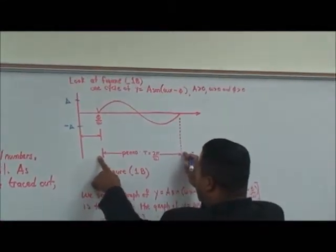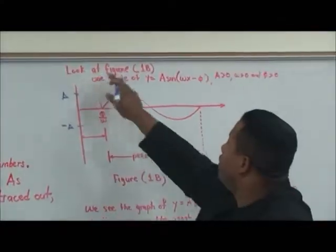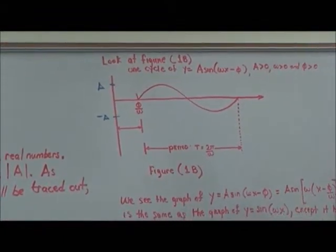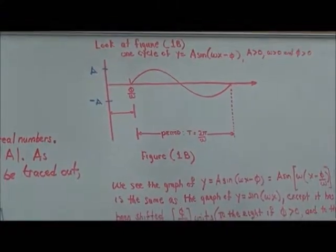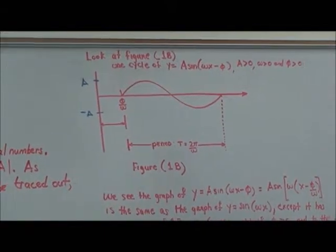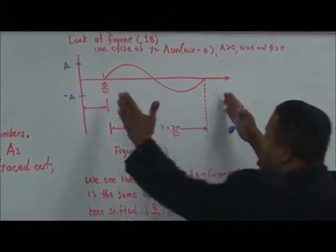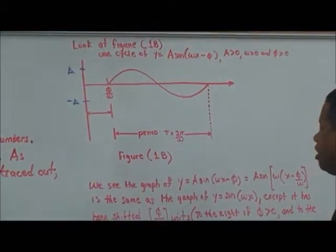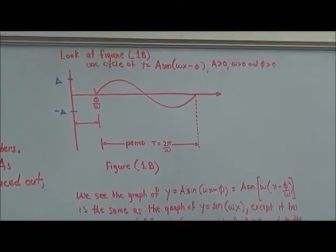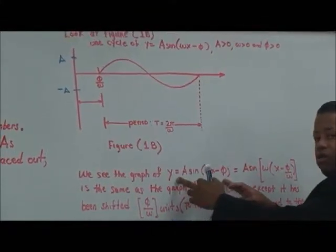This is the period T right here. Looking at one cycle of y equals A·sine(ωx minus φ), where A > 0, ω > 0, and φ > 0 — this is the expression we have. The graph of y equals A·sine(ωx minus φ) can be written in this form or equivalently as A·sine(ω(x minus φ/ω)).